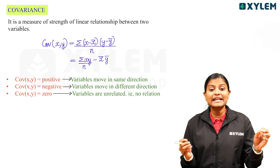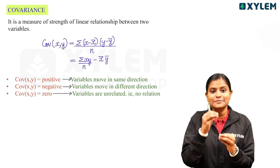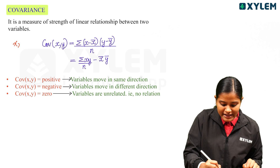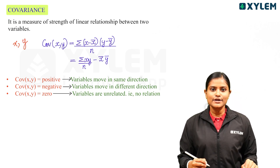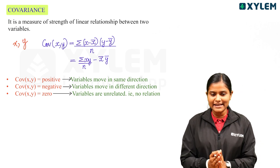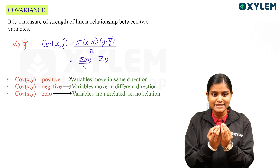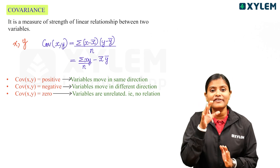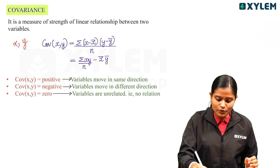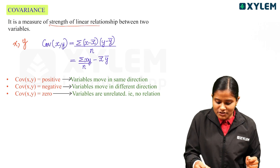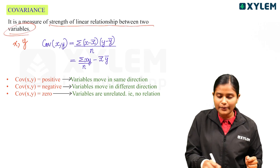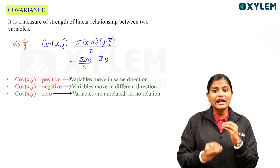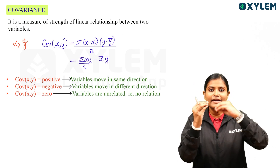Covariance means the strength of the relationship between two variables — one X variable and one Y variable — in terms of their linear relationship. These are the two variables in our hands. If there is a relationship between these two, we have to check the Covariance. Covariance is the strength of linear relationship between two variables. An example would be height and weight.